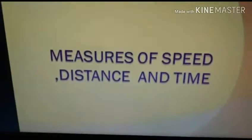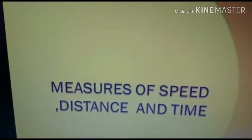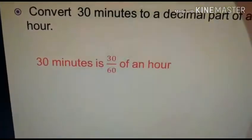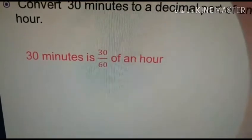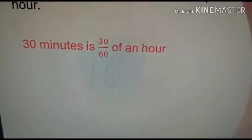Now, I am going to show you how we can convert the time to a decimal form. Look here. Convert 30 minutes to a decimal part of an hour. We know an hour is 60 minutes, so 30 minutes is 30 over 60 of an hour. What is the simplest form of 30 over 60?